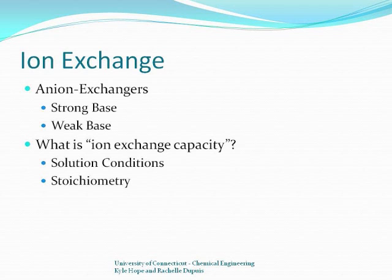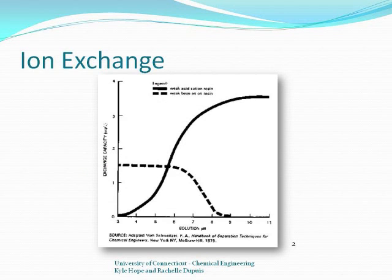Similarly, exchanging for a +1 ion like potassium would create an even ratio. This is the concept of exchange capacity, and strong acid cation exchange resins have an exchange capacity independent of solution pH. On the other hand, the exchange capacity of weak acid cation exchangers does depend on solution pH. The graph on the screen shows the effect of solution pH on exchange capacity for both weak acid and weak base exchange resins. Weak base and strong base anion exchangers exhibit behaviors similar to those substances.